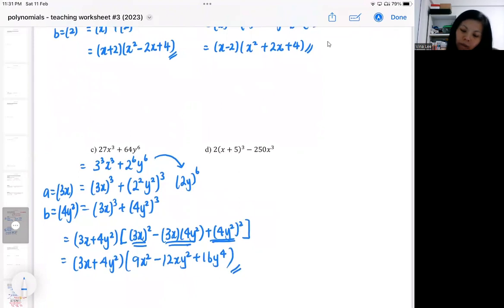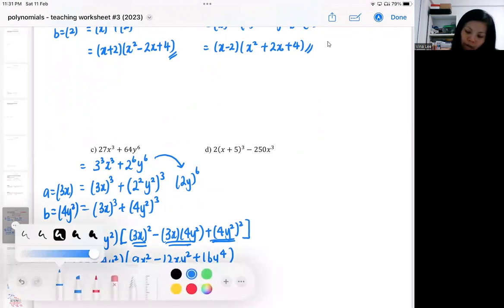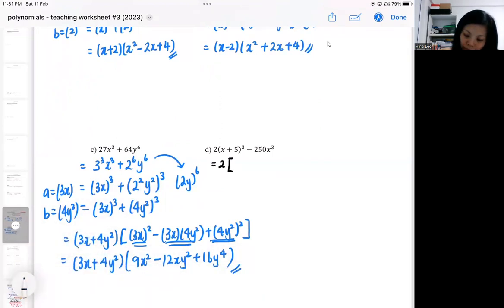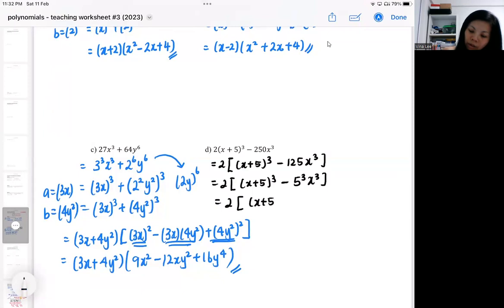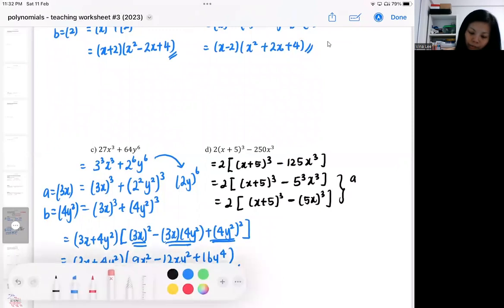The next one - if you observe, you can already see a cube, but 250 is actually not a very nice number. In fact, in this question, there is a common factor. If you apply the common factor, observe the numbers 125. In the end, you will get a³ minus b³. So my a is x plus 5, my b is 5x.